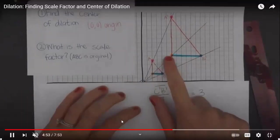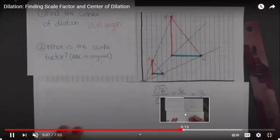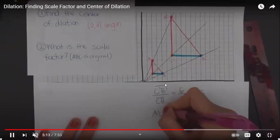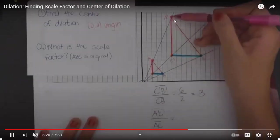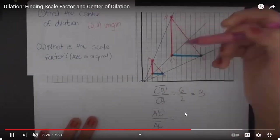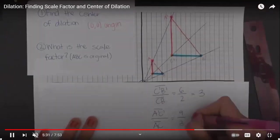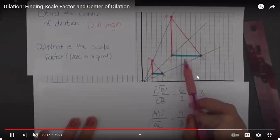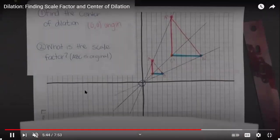If I want to verify using another side, I can use A'C' and AC. The line segment A'C' measures 9 units and AC measures 3 units. So 9 over 3 equals 3. Both sides give the same answer, so the scale factor for this triangle is confirmed to be 3.